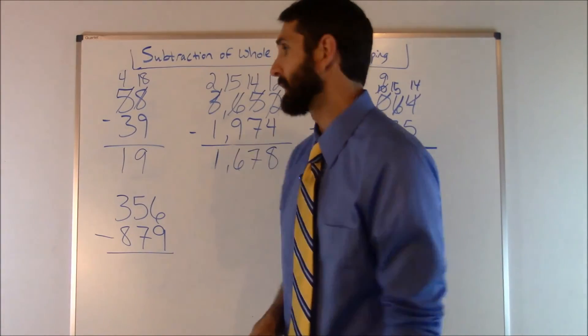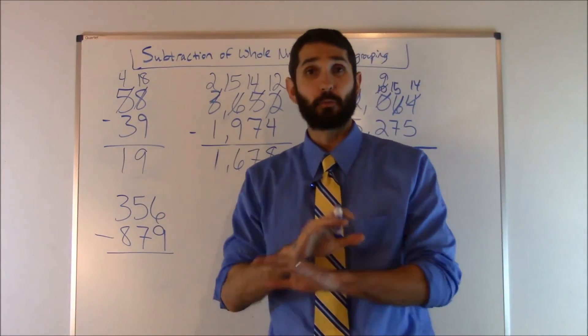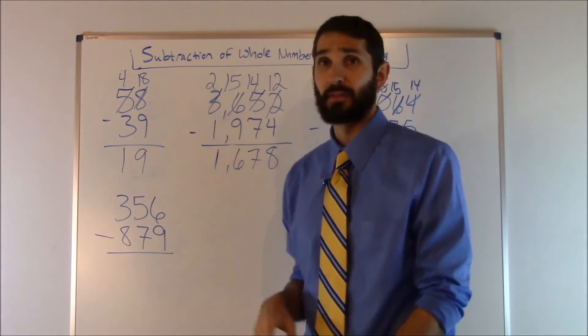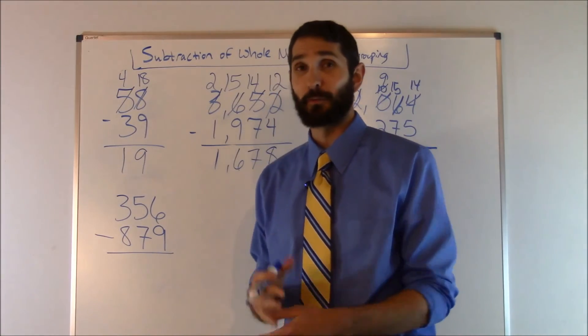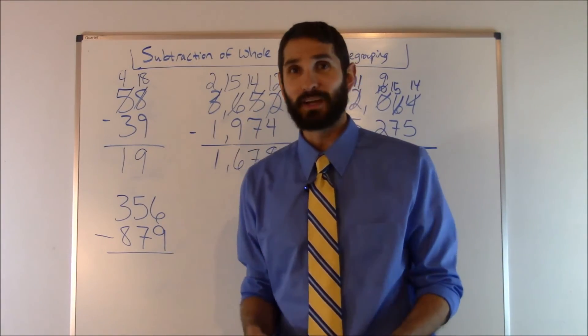Now let's look at one that may confuse you a little bit. We have 356 minus 879. Okay, well hold up. First of all, the number on the top is less than the number on the bottom. So that's going to create a problem for us because we're dealing with whole numbers. This is going to be a negative answer.